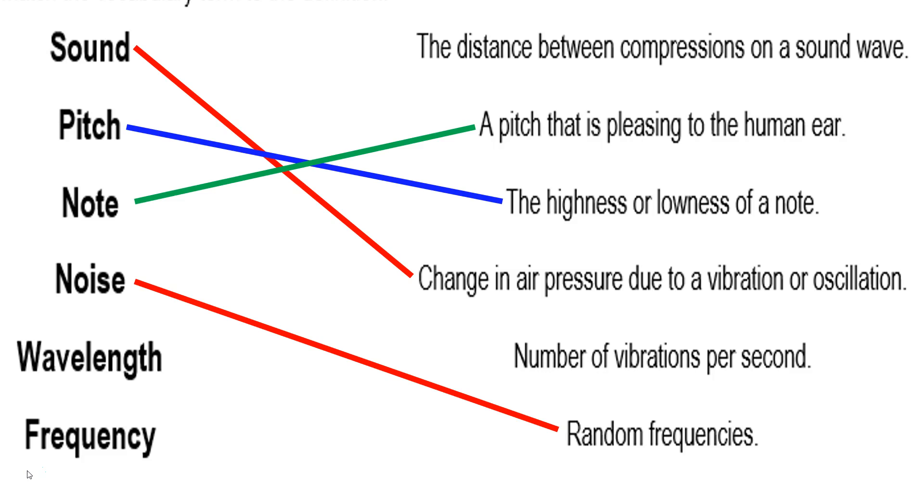Noise is just random frequencies, like white noise. White noise is still a bunch of frequencies, but they aren't quite notes - they aren't pleasing to the human ear. Wavelength is the distance between compressions on a sound wave. Frequency is the number of vibrations or waves per second.